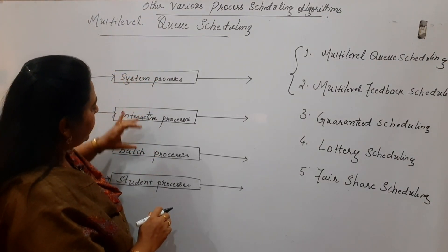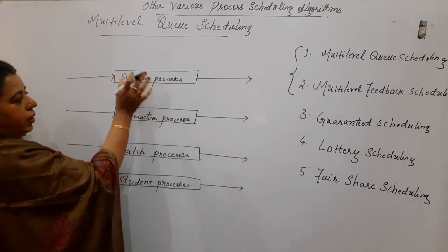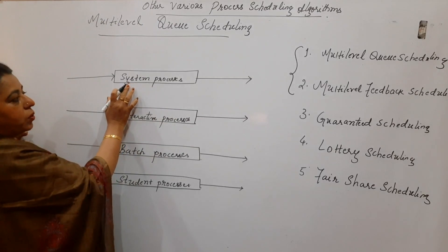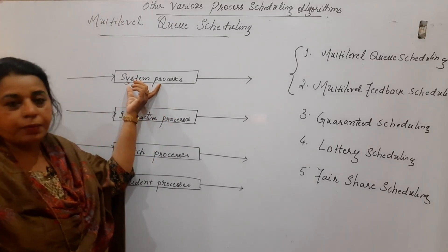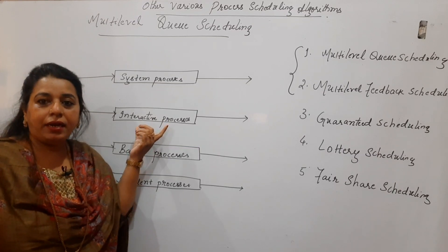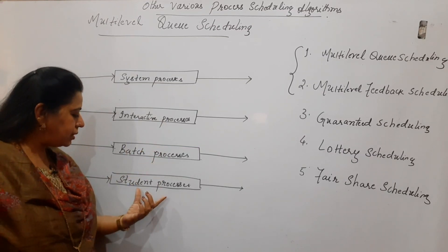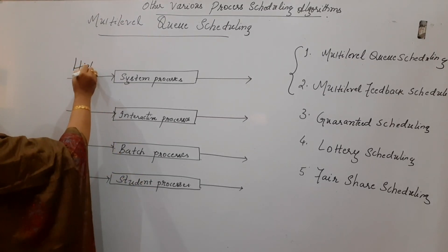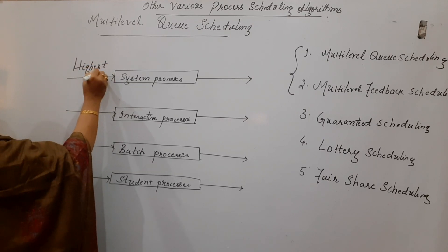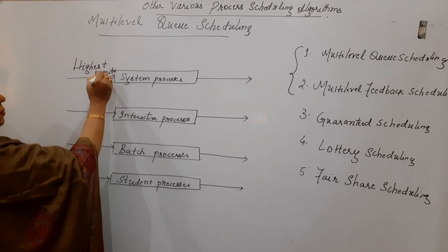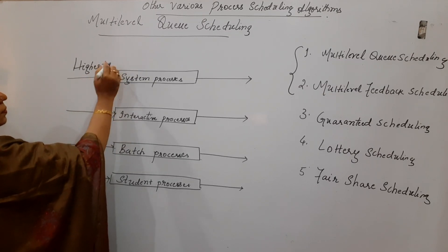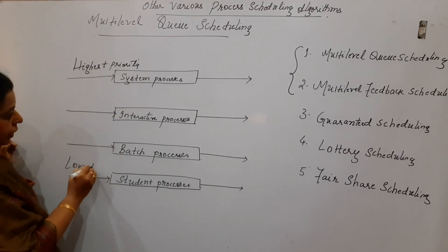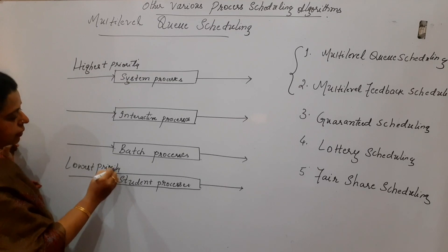The categories are: first, System Processes — those executing tasks to make the operating system function; second, Interactive Processes; third, Batch Processes; and fourth, Student Processes. The highest priority is given to System Processes, and the lowest priority is given to Student Processes.